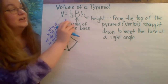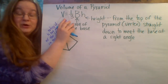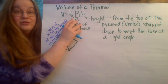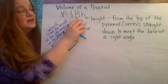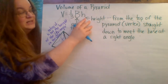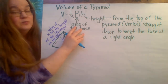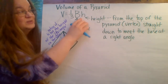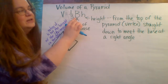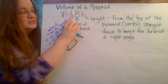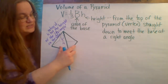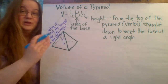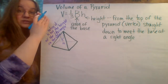Starting out, the volume of a pyramid is very similar to a prism, except that it's one-third times the area of the base times the height. We have the area of the base just like we did with a prism, which is the big B, times the height. But this time you're taking one-third, because a prism goes straight up, whereas the pyramid goes up to a point.